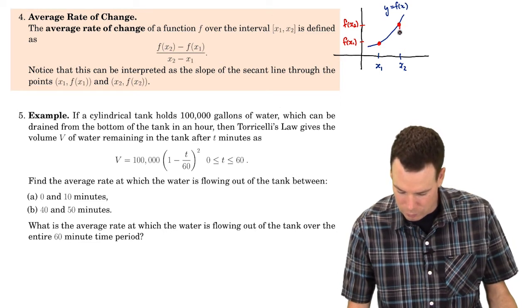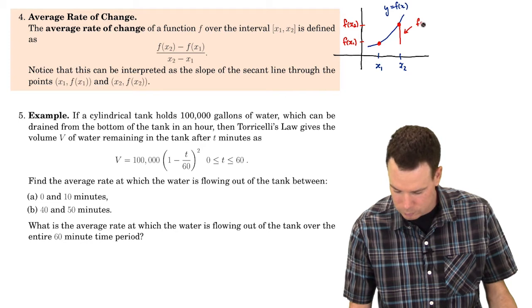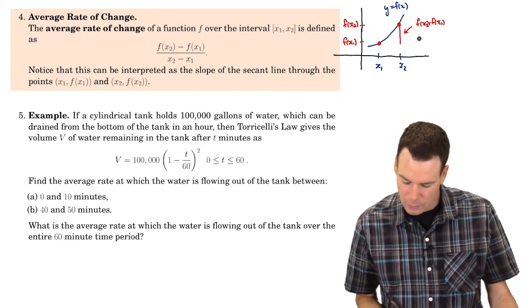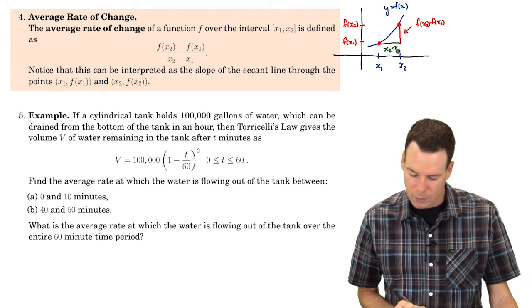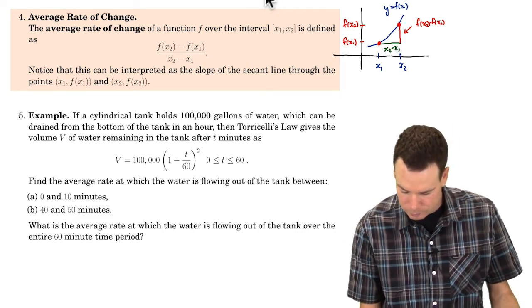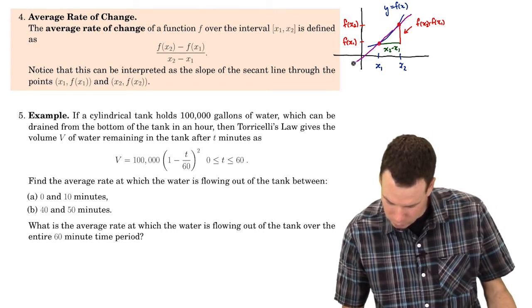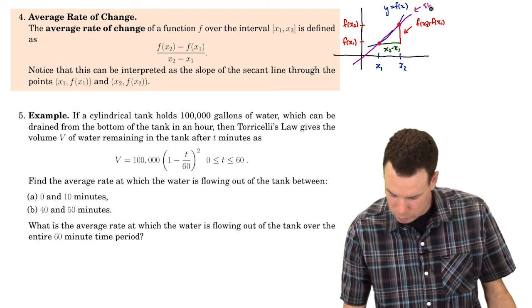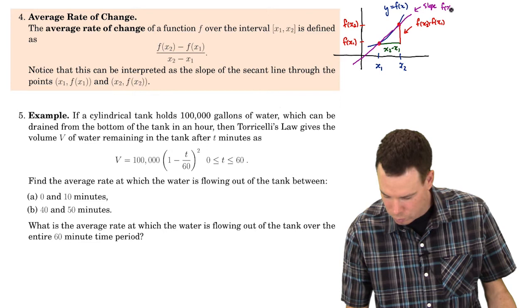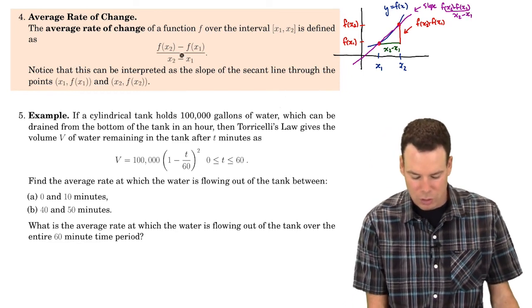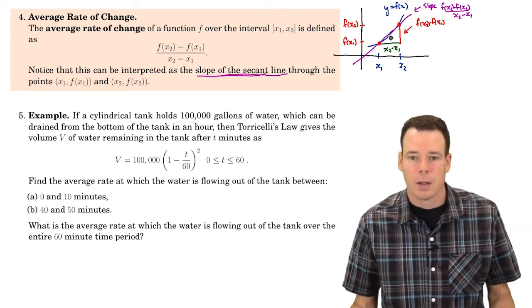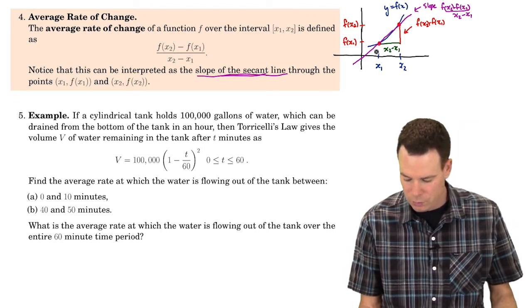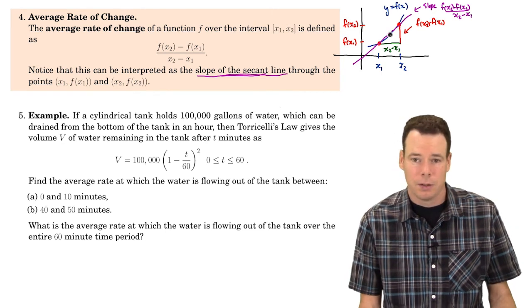Well, f of x2 minus f of x1 is this height here, and x2 minus x1 is this distance here. So what this ratio represents is the slope of the line through those two points: slope equals f of x2 minus f of x1 all over x2 minus x1. So we can interpret this average rate of change as the slope of the secant line through the two points.